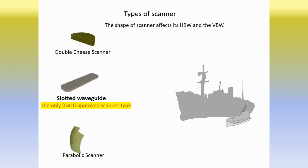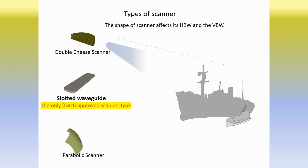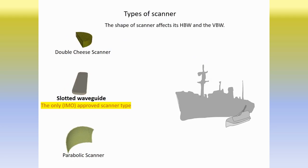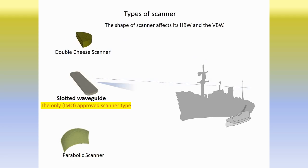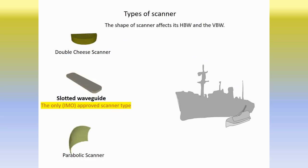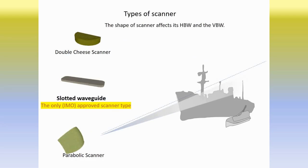The horizontal bandwidth and the vertical bandwidth are affected by the shape of the scanner. The IMO performance standards have decided that the flat tube scanner shape is the best for marine purposes, and therefore this shape is the only type of approved scanner.